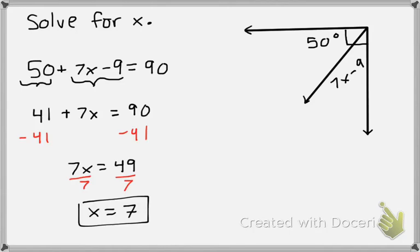Okay, so when we do small part plus small part, it's 50 plus 7X minus 9 equals big part, which is 90 because of our right angle symbol. Then if you solve, you should end up with X equals 7.